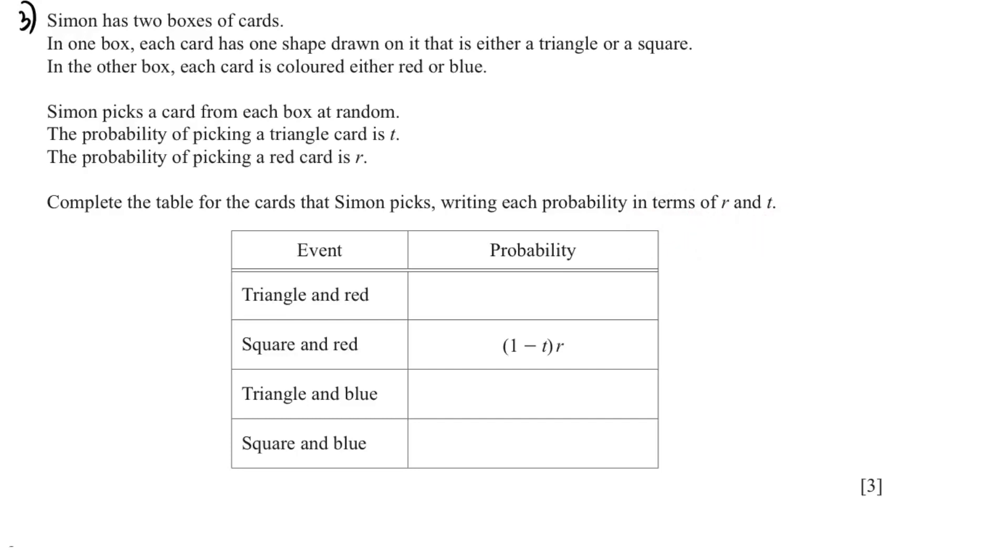So the probability of picking a triangle card is t and a red card is r. We have not been given the probability of square and blue, but we know that both the probabilities when we add they equal to 1. So the probability of square plus triangle is 1. Therefore probability of square will be 1 minus t.